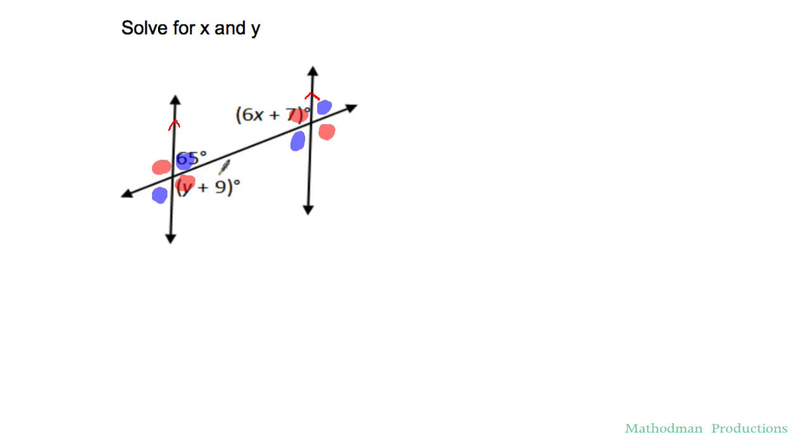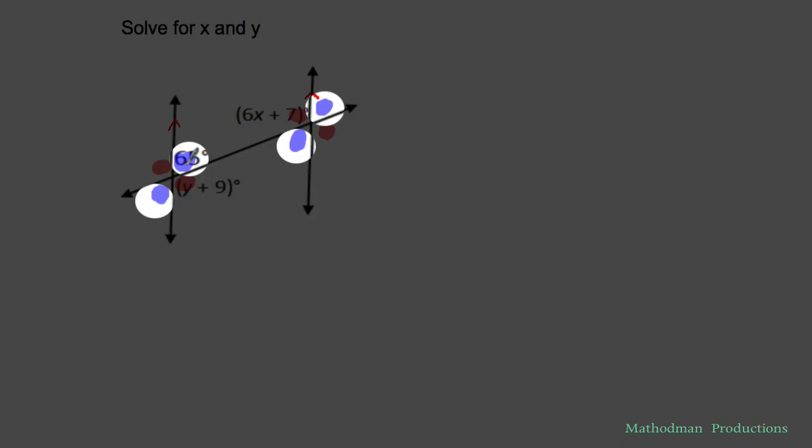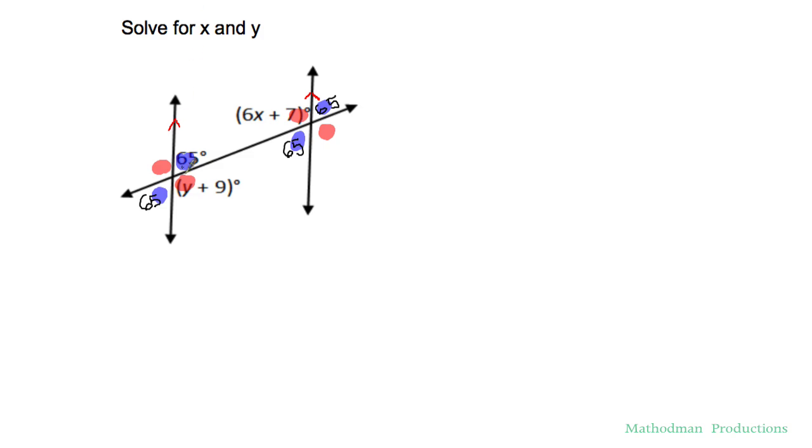I'm trying to look for an important information which is this 65. That means if this is 65 everything in blue is 65 as well. To find the value of red all I have to do is do 180 minus 65 because that's a linear pair and that would make this 115. Now you can do the same thing.